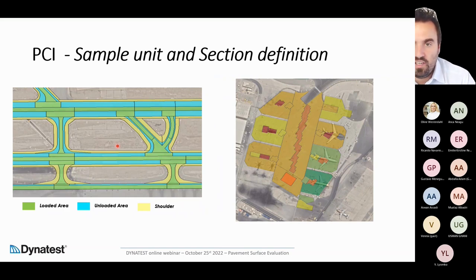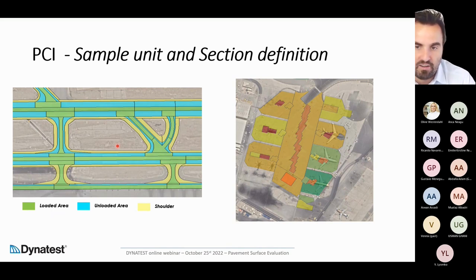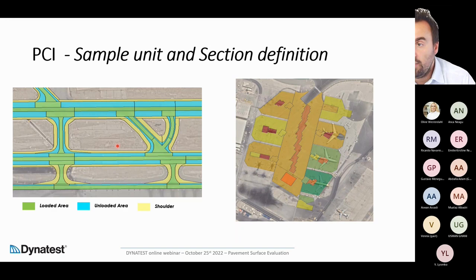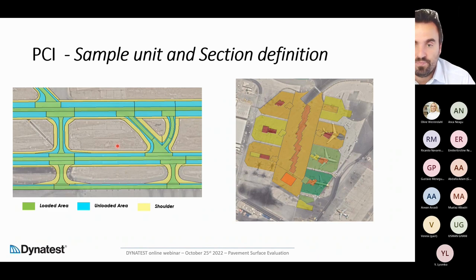In an airport there is a big subdivision of the area between loaded area, unloaded area, and shoulder — each being quite a consistent area. In the apron, most areas are not traffic-related but must still be rated to guarantee safety performance. Today's fast technology simplifies the work compared to manual rating and sampling identification.